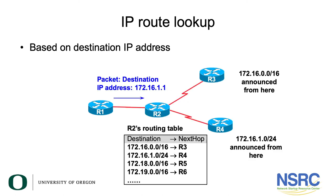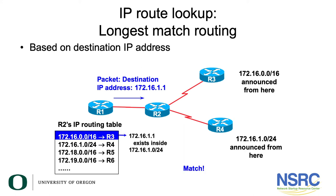As you can see on the screen, an IP packet arrives at router R1 with a destination IP address of 172.16.1.1. This packet is forwarded to router R2, and router R2's routing table is displayed on the screen. The routing table has four prefixes. The first prefix is 172.16.0.0/16 with a next hop of router R3. You also have prefix 172.16.1.0/24 with a next hop of router R4, and 172.18.0.0/16 with a next hop of router R5. The first prefix 172.16.0.0/16, pointing to router R3, is a match because the IP address 172.16.1.1 falls within its range.